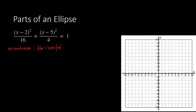We will be following the format where we have (x minus h) squared over a squared, plus (y minus k) squared over b squared, equal to 1. So we follow this format for horizontal orientation of an ellipse.